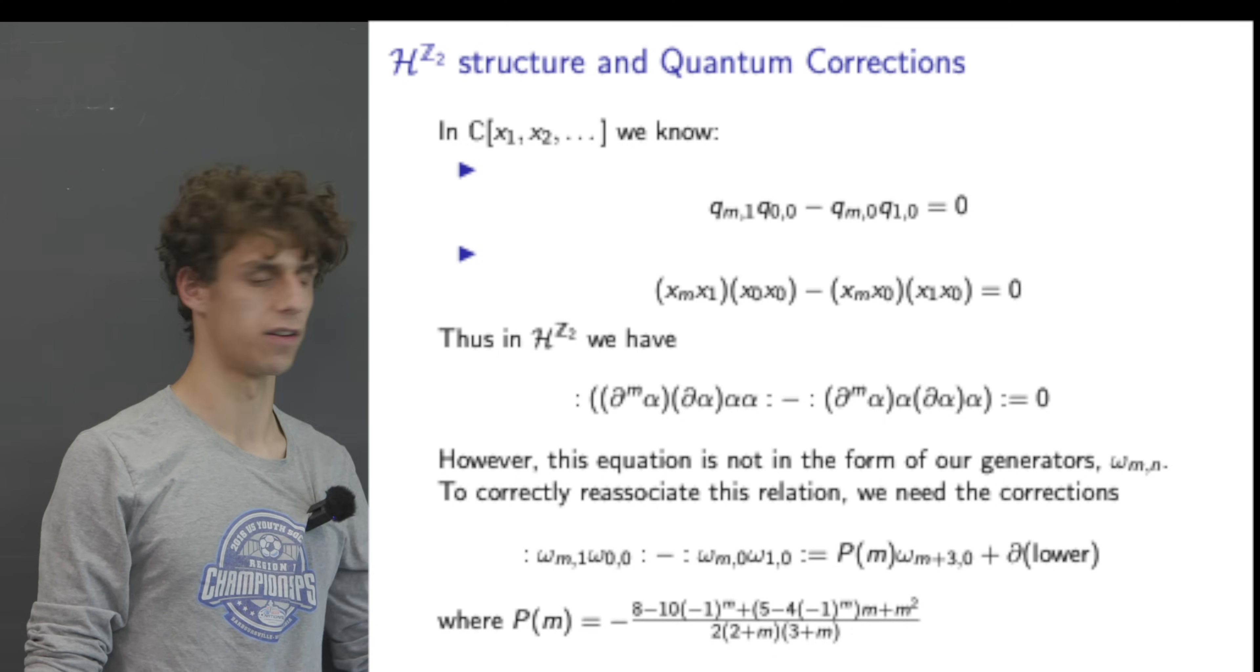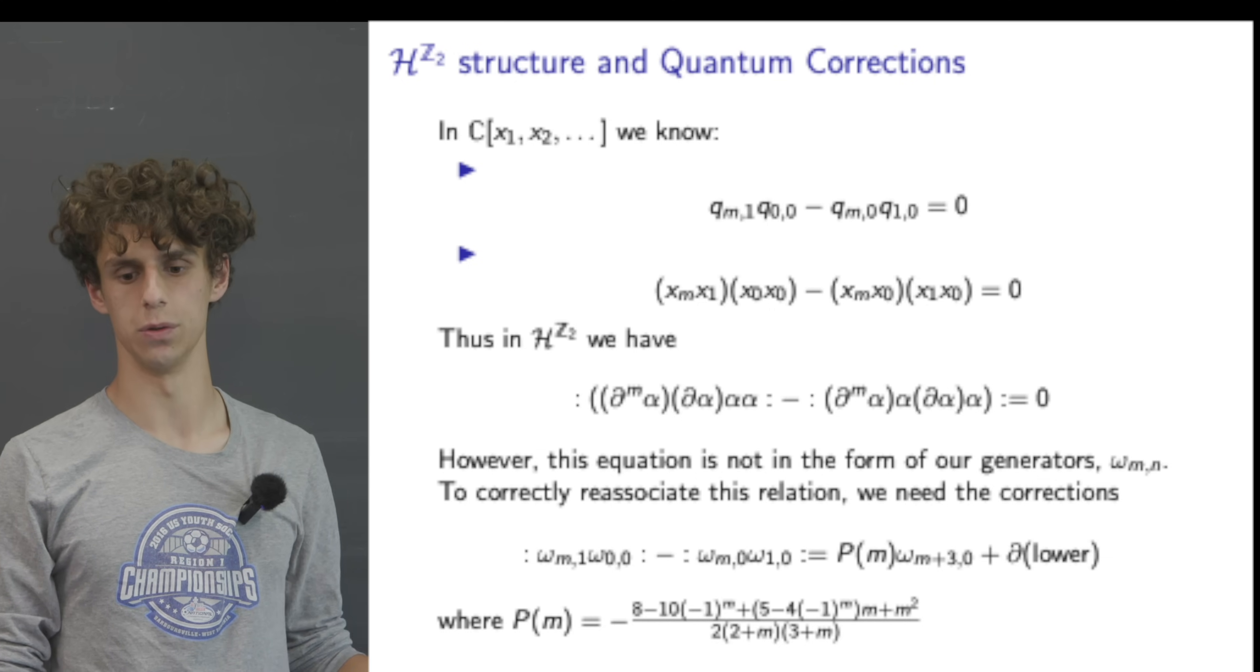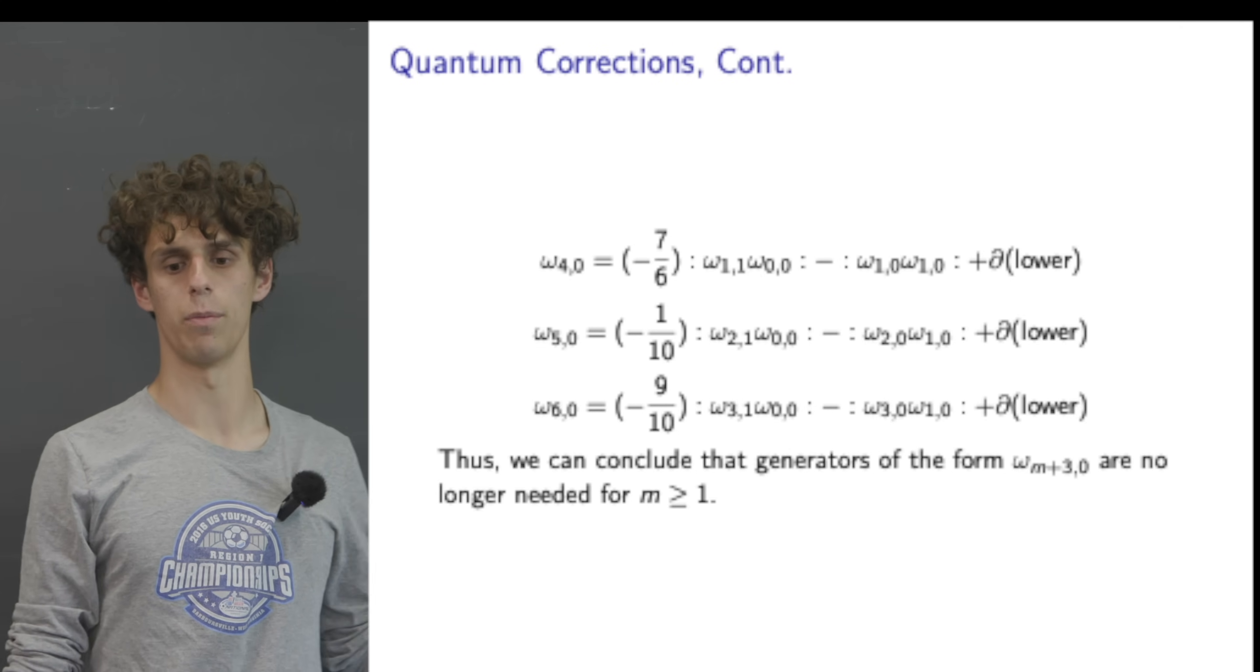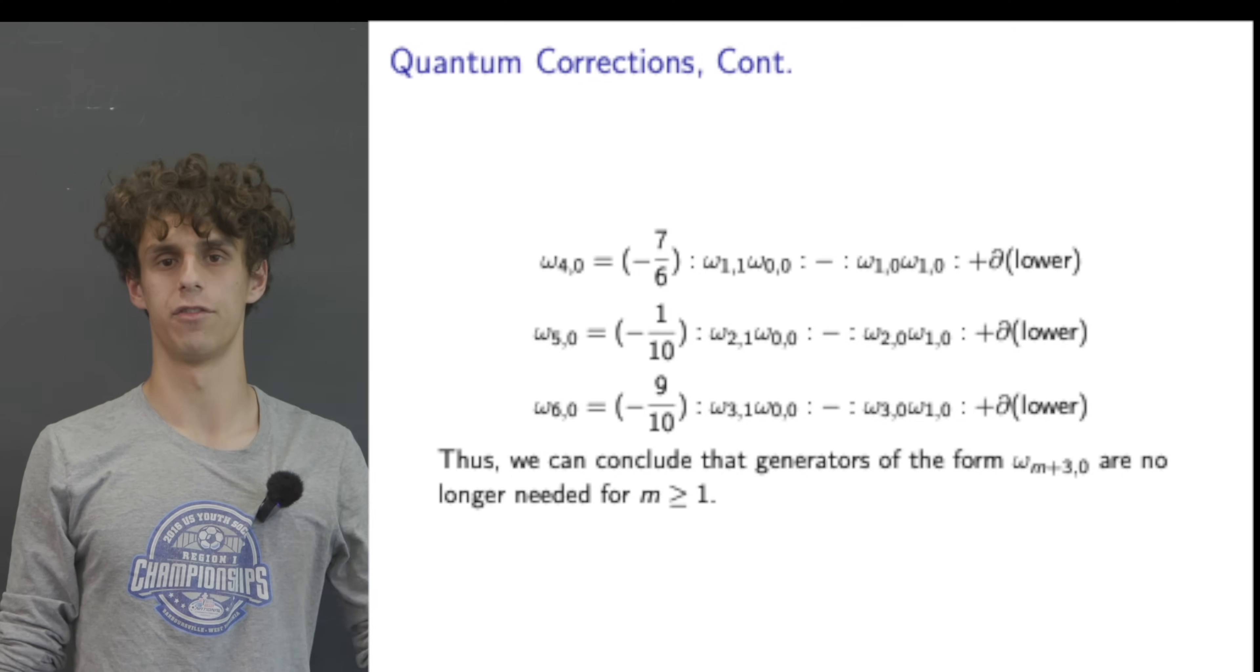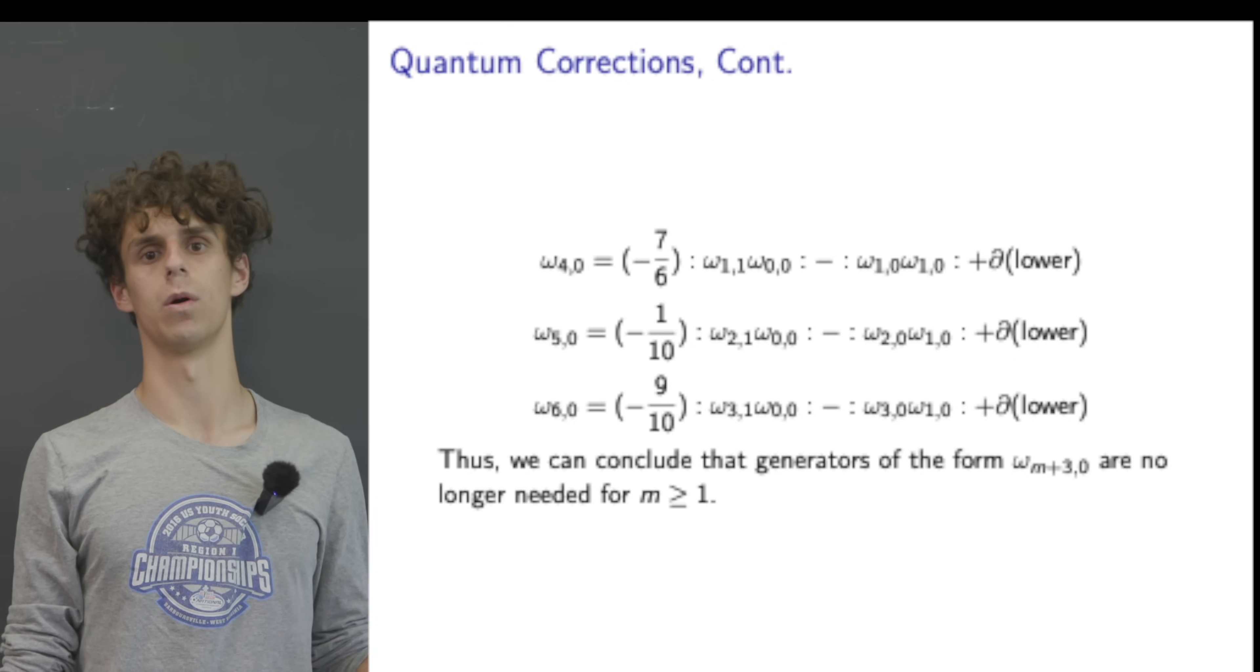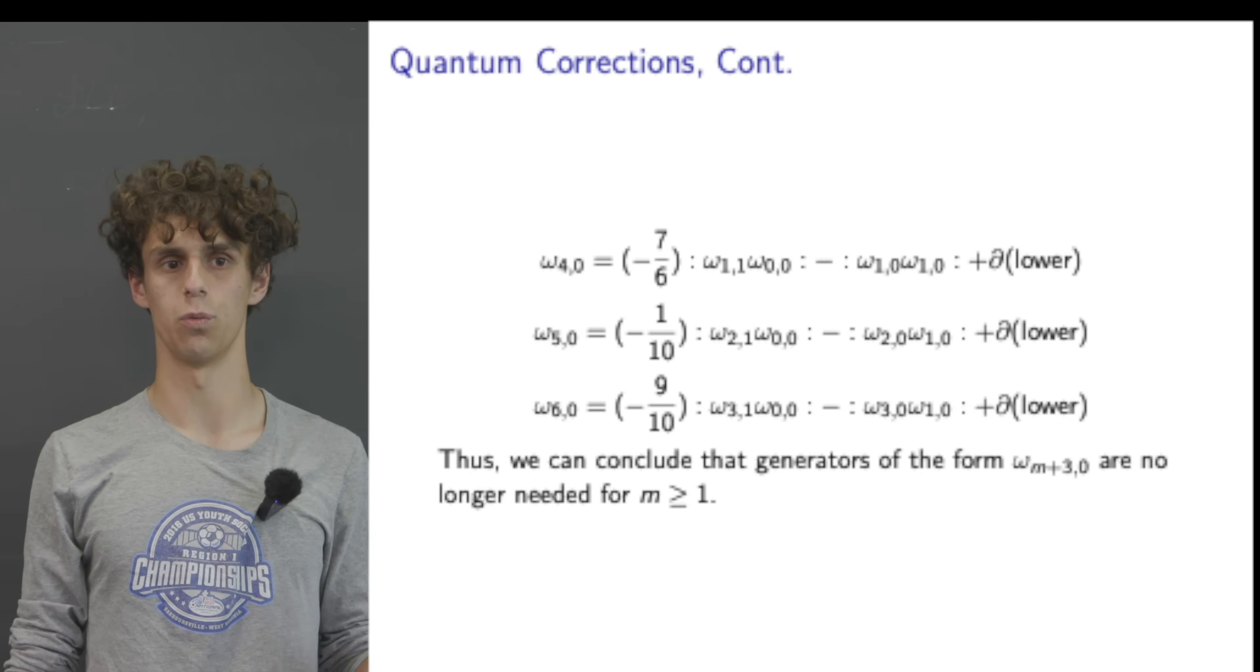Via the structure of the Heisenberg algebra we can find this coefficient for omega_{M+3,0} plus the derivative of some lower weighted function where the coefficient is equal to this long number. From here we can take M to be 1 and then 2 and then 3 and get omega_{4,0}, omega_{5,0}, and omega_{6,0}, and from here we can find omega_{M+3,0} and conclude that we don't need generators of the form omega_{M+3,0} where M is greater than or equal to 1.